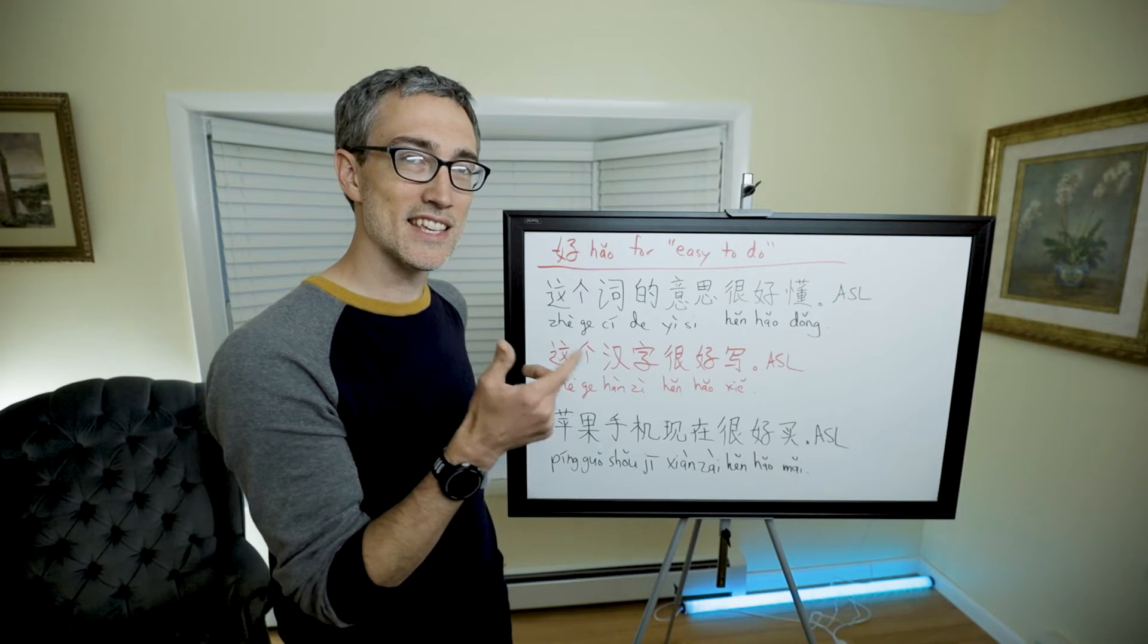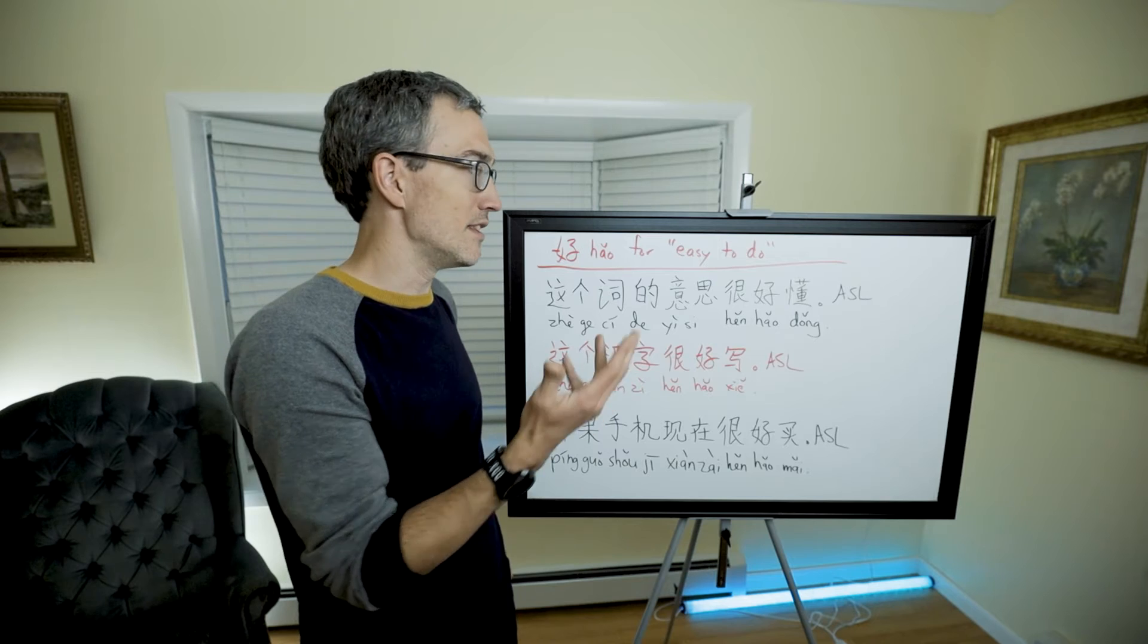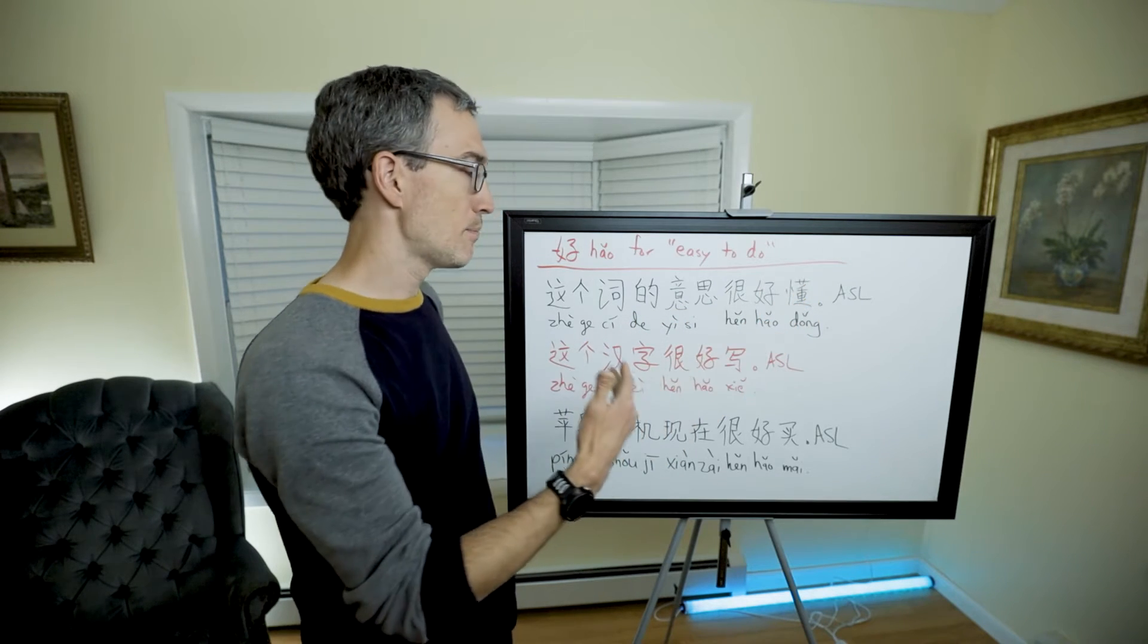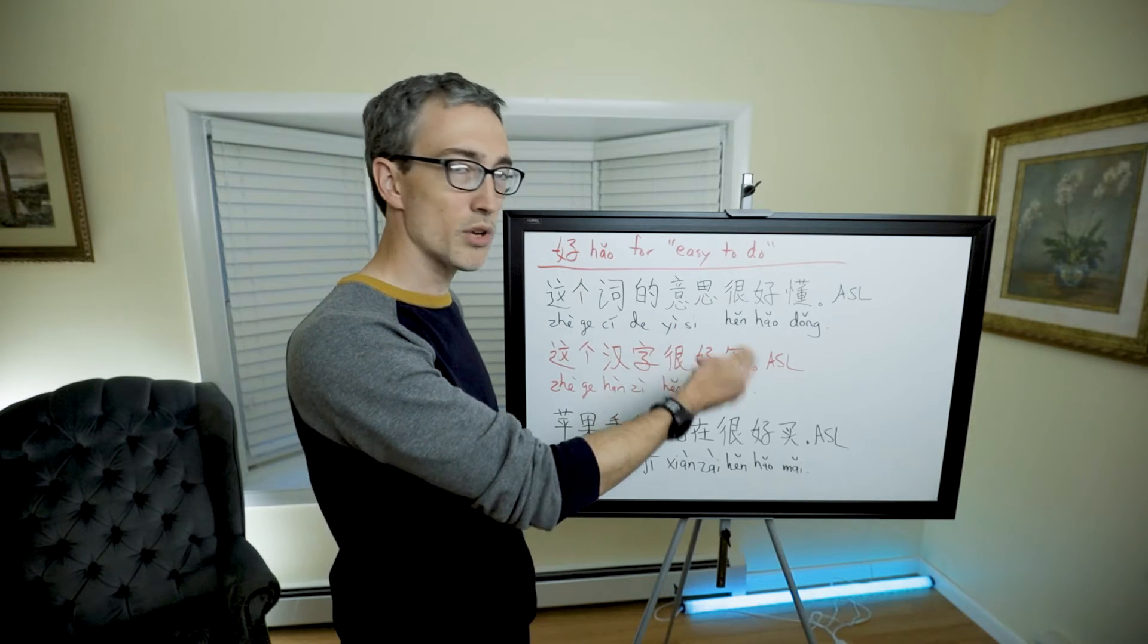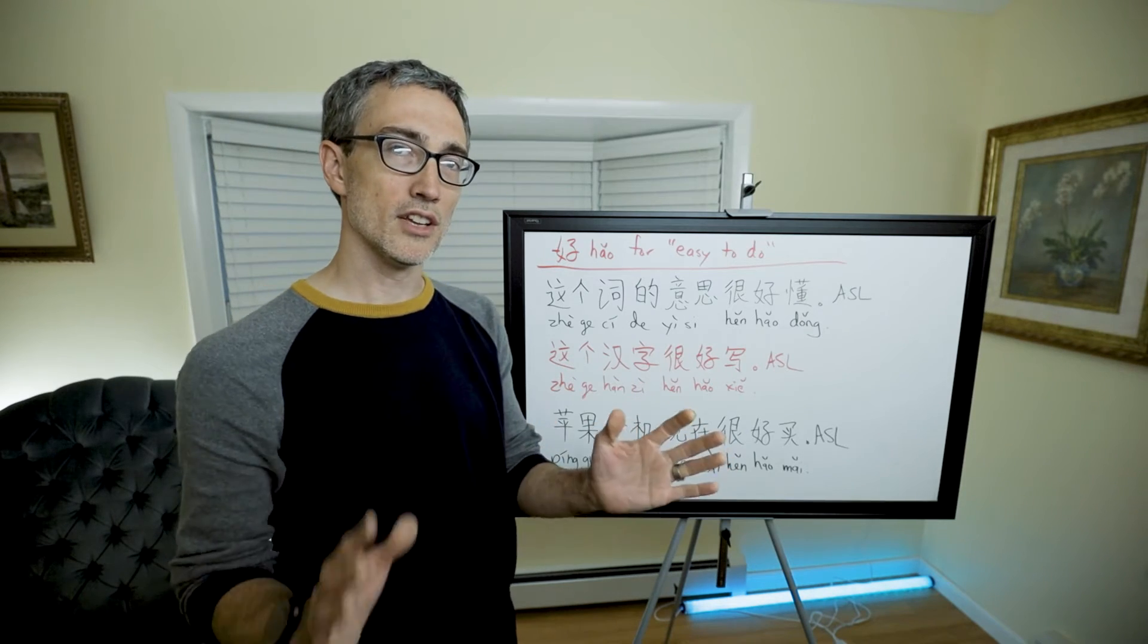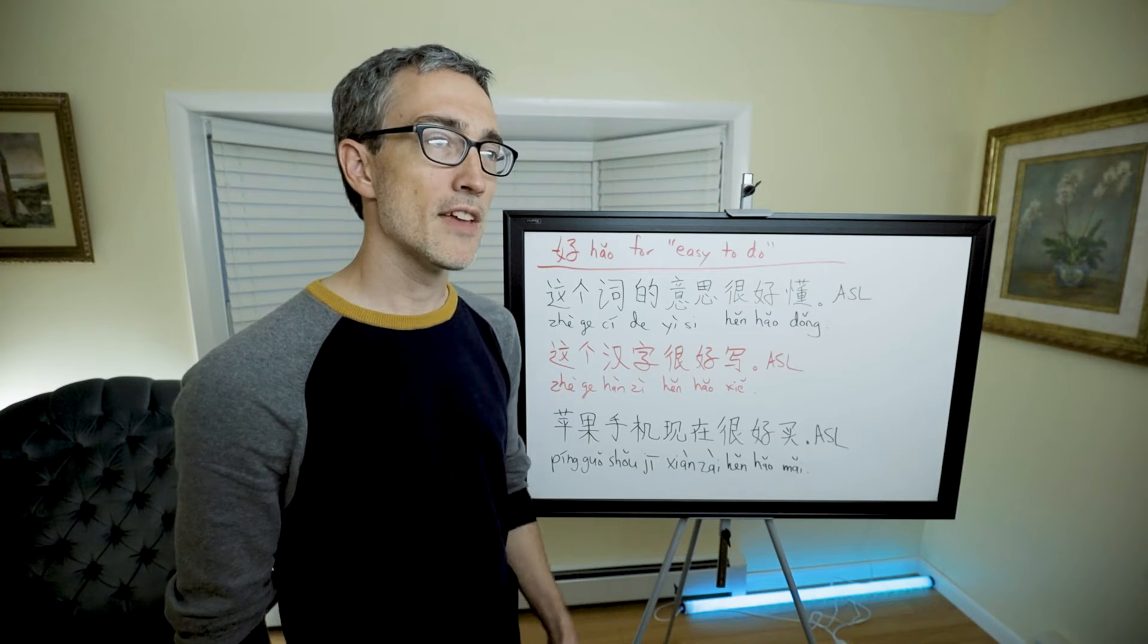So 容易 is the normal word for easy, but when you put 好 before a verb then it means easy. But I could say 写这个汉字很容易, writing this character is very easy. It can be flipped around, but this is one way to say it.